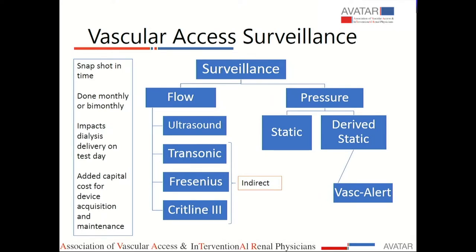Broadly, surveillance can be divided into flow-mediated and pressure-mediated. I'm not going to talk about the pressure because I do have a conflict there. Flow has always been the predominant surveillance methodology used in managing the access. Flows can be measured either using ultrasound or using devices like Transonic, Fresenius, and various other devices which are available. The problem is they are all a snapshot in time — some can be done monthly or bi-monthly. Every time you want to do a Transonic or Fresenius online dialysis clearance, it impacts the dialysis delivery. As it is, our patients are getting less dialysis time.